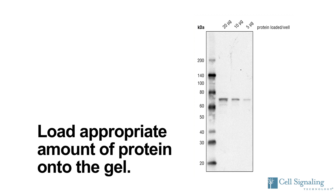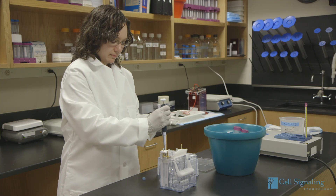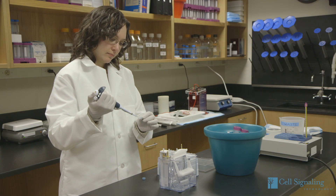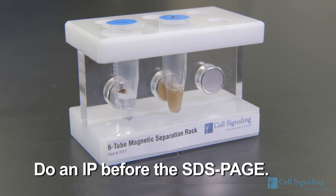Thirdly, undetectable protein can also result from inadequate loading of lysate onto the gel. CST recommends loading 20 mcg of protein lysate per lane. However, if protein levels are below detection, 40 mcg or more of protein can be loaded, or an immunoprecipitation prior to running the SDS-PAGE may be necessary.